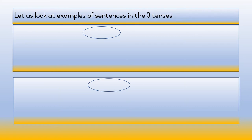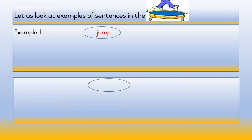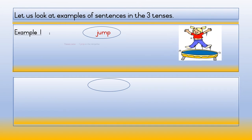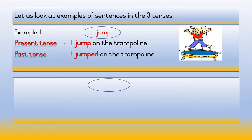Let us look at examples of sentences in the three tenses. Example one — the word is 'jump.' Present tense: I jump on the trampoline. Past tense: I jumped on the trampoline. Future tense: I will jump on the trampoline.